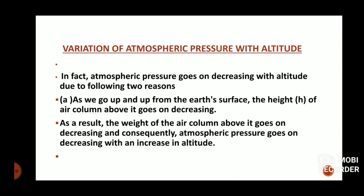As we go up from the Earth's surface, the height of the air column decreases. Because height in the air column decreases, the weight will be reduced, and when the weight is reduced the atmospheric pressure will be reduced — because pressure is due to the weight of the air column. So if the air column decreases, the atmospheric pressure will be reduced.